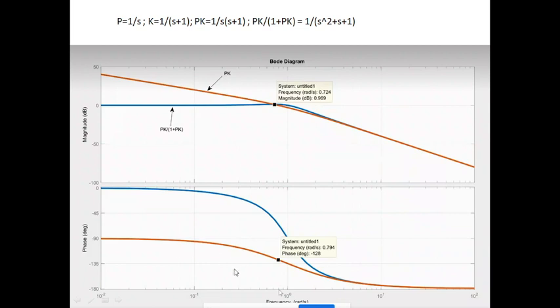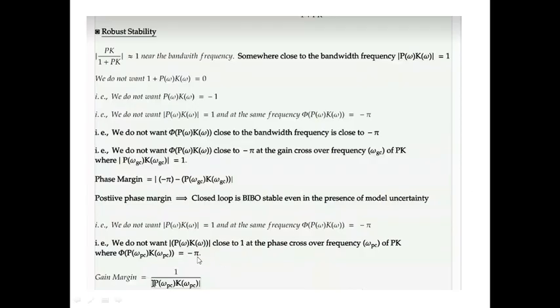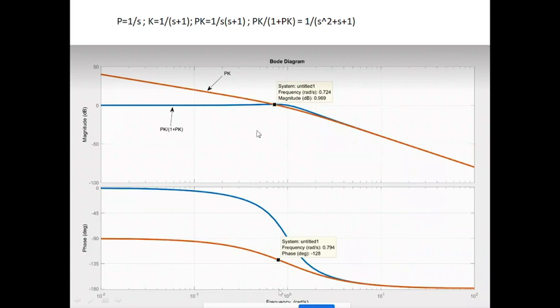In this particular example, we see that it does not touch -π; instead it goes to -π at infinity. At infinity we have very small magnitude of PK, and hence this would go to infinity.